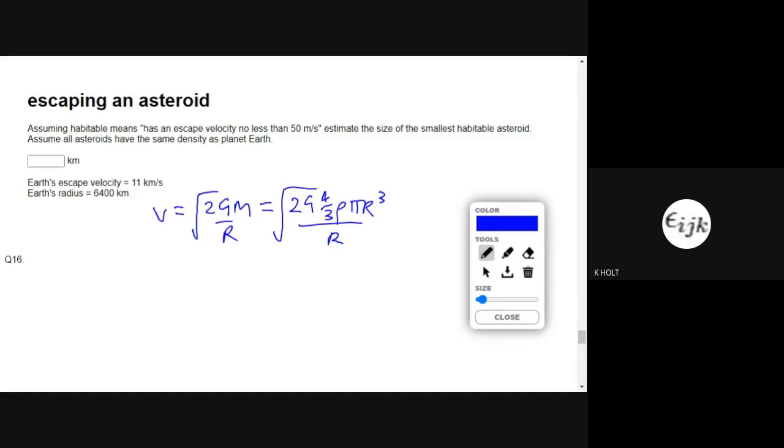From that, we can see that escape velocity is proportional to the radius if the density is constant and everything else in there is constant.